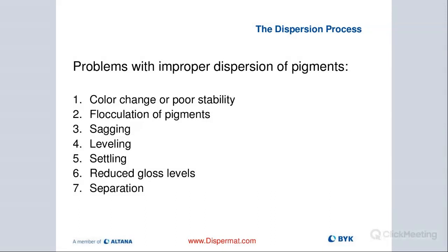If we don't follow a proper pre-dispersion or dispersion process, it's going to lead to poor product quality. We'll have issues with color, and there might be a bigger delta between different lots. Poor stability of our product, and also flocculation of pigments. Big USA is really good at helping select the right type of additives to go into the formulation, which would help avoid those kinds of issues — especially with flocculation, sagging, leveling, and settling.